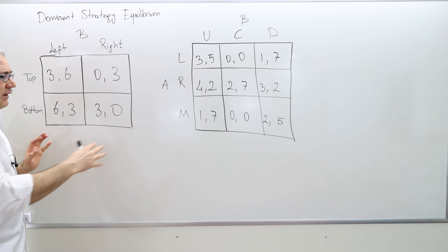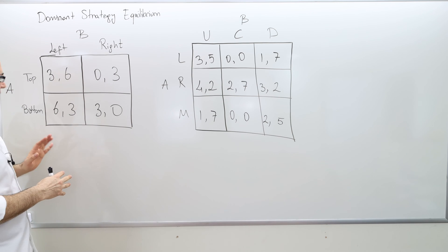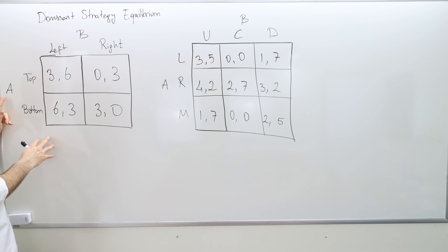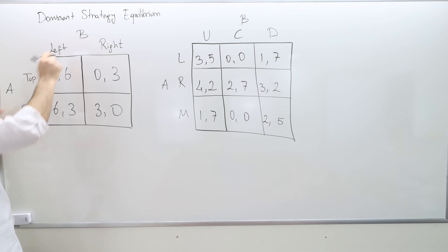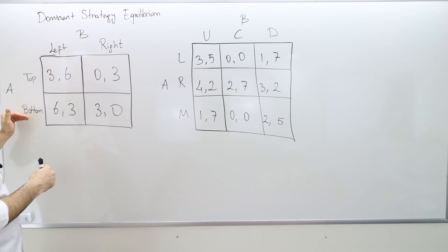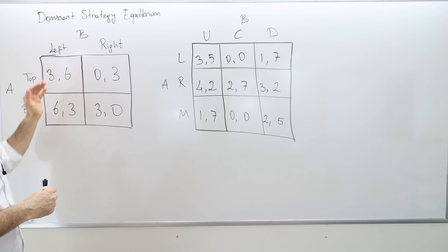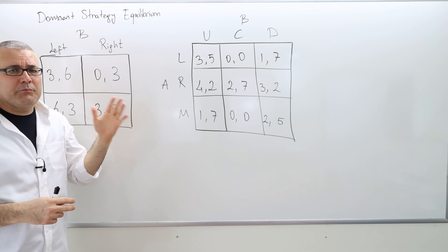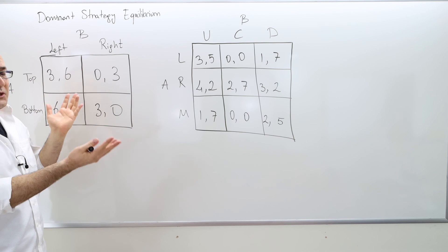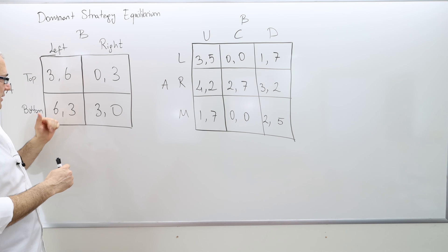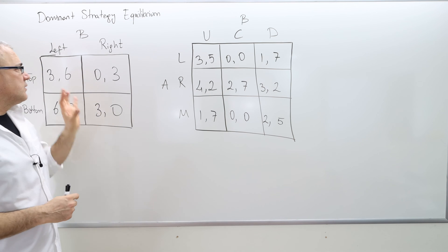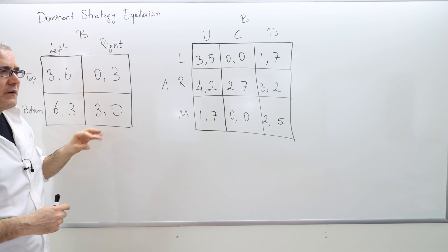The first game is relatively simpler than the other. In the first game, we have two players — player A and player B. Each player has two actions: top and bottom for player A, left and right for player B. So each player has two available actions, and these are the payoffs — four outcomes in total.